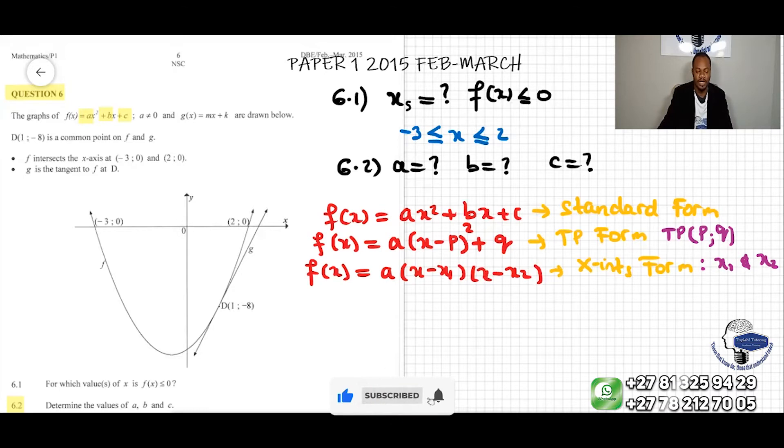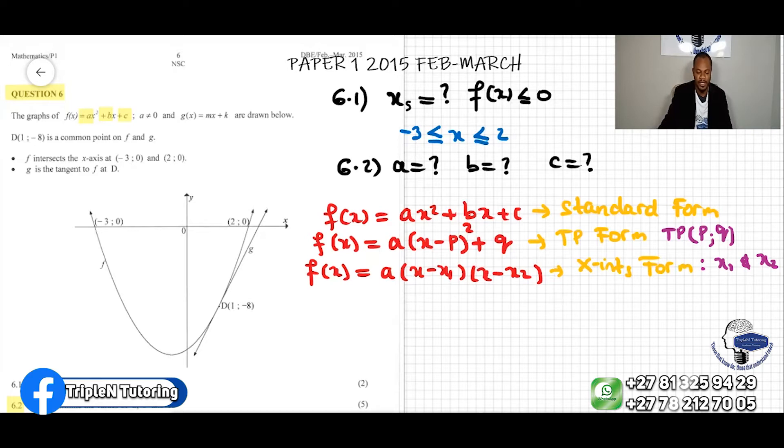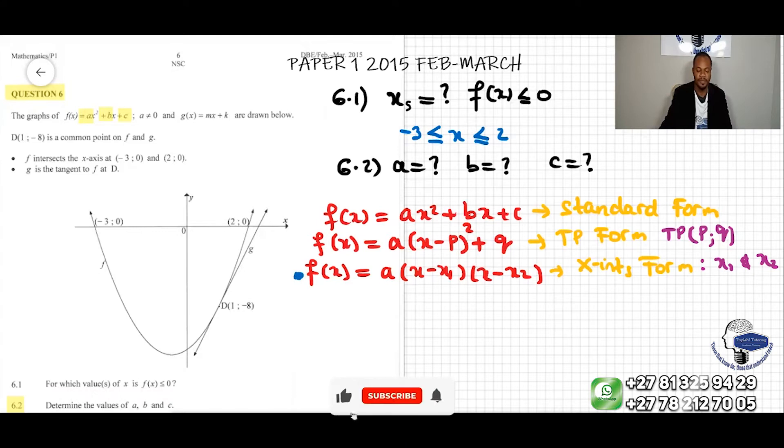Now I'm going to use this information to work out the value of A, B and C. First, I'm going to use the last form of quadratic equation. Why am I choosing that? Because I can see I already have the intercept in this question.